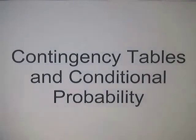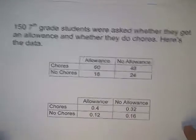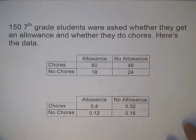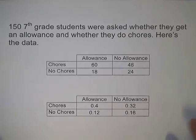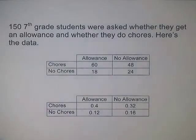This tutorial covers contingency tables and conditional probability. So 150 7th grade students were asked whether they get an allowance and whether they do chores. Here's the data.